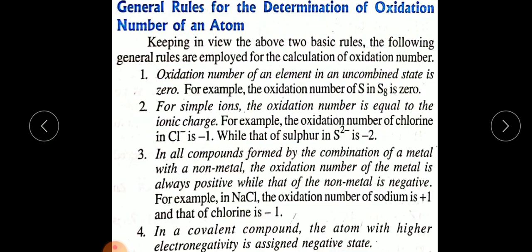Now the general rules for the determination of oxidation number — each and every atom has its own oxidation number. How do we find out what the oxidation number of a given element is? We have certain rules to keep in mind. The following general rules are employed for the calculation of oxidation number.